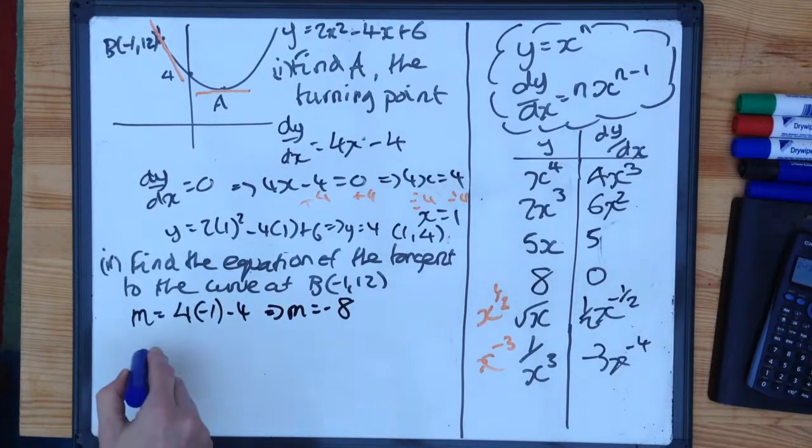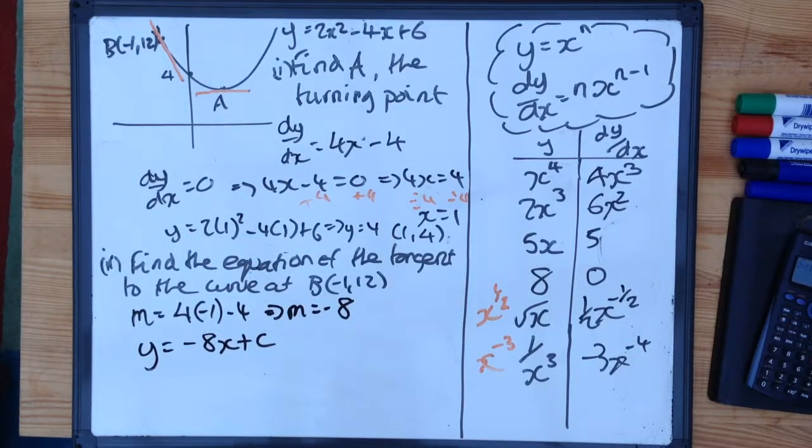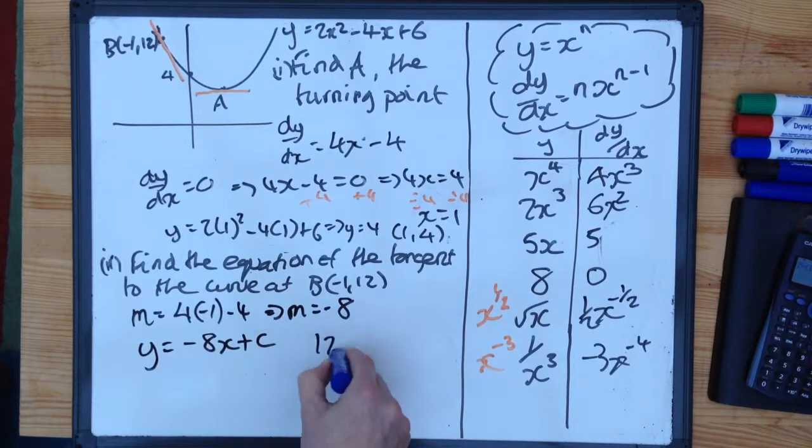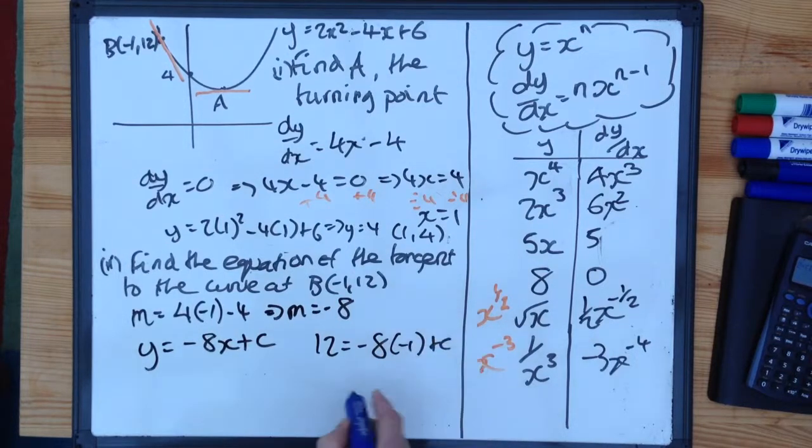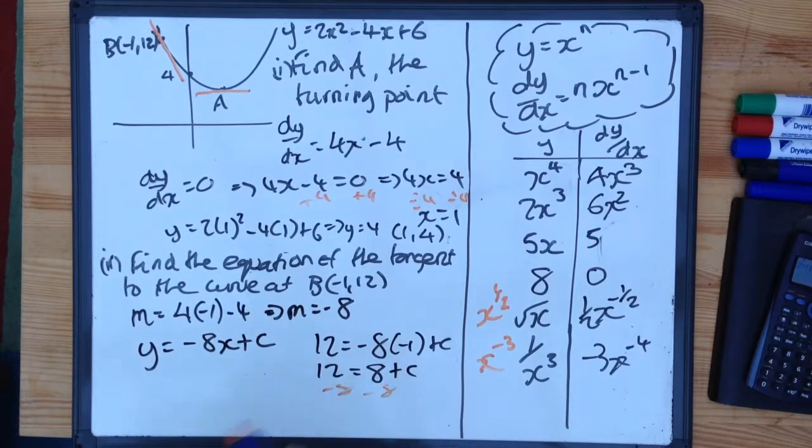So my equation so far is y is equal to minus 8x plus c. To find my plus c, I'm going to use my minus 1, 12 in the equation here. So we're going to say that y is 12 is equal to minus 8 times by x, which is minus 1, plus c. So 12 is equal to minus 8 times minus 1 is 8, plus c. Take 8 from both sides, and we end up with 4 is equal to c.